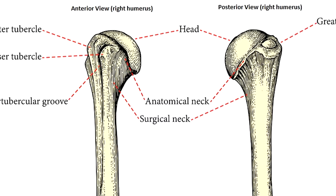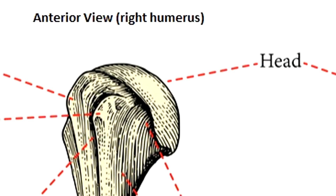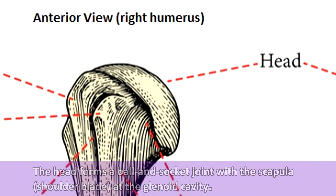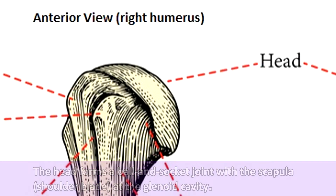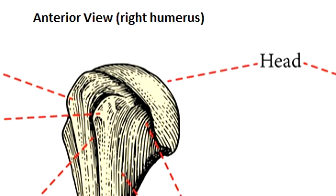Let's start with this ball-shaped section at the proximal end or top of the humerus, which is called the head. It has a ball shape for a reason — it forms a ball-and-socket joint with the scapula or shoulder blade at the glenoid cavity, which not only allows you to move your arms in various directions, but also allows you to throw your hands in the air and wave them like you just don't care.